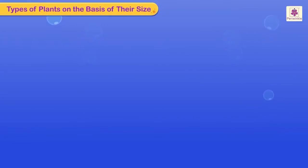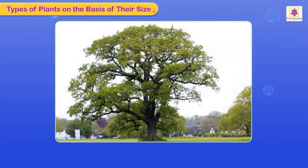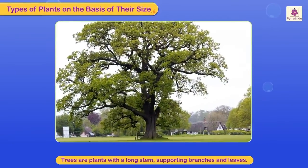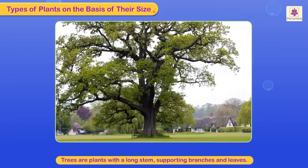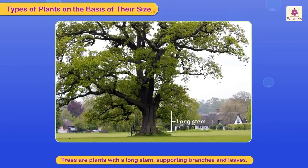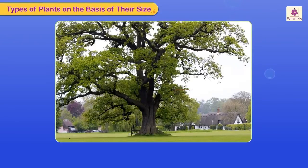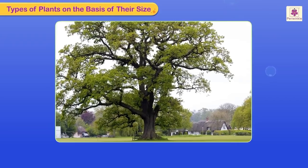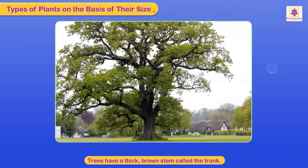Types of plants on the basis of their size. Trees are plants with a long stem supporting branches and leaves. They are big in size and have a thick brown stem called the trunk.